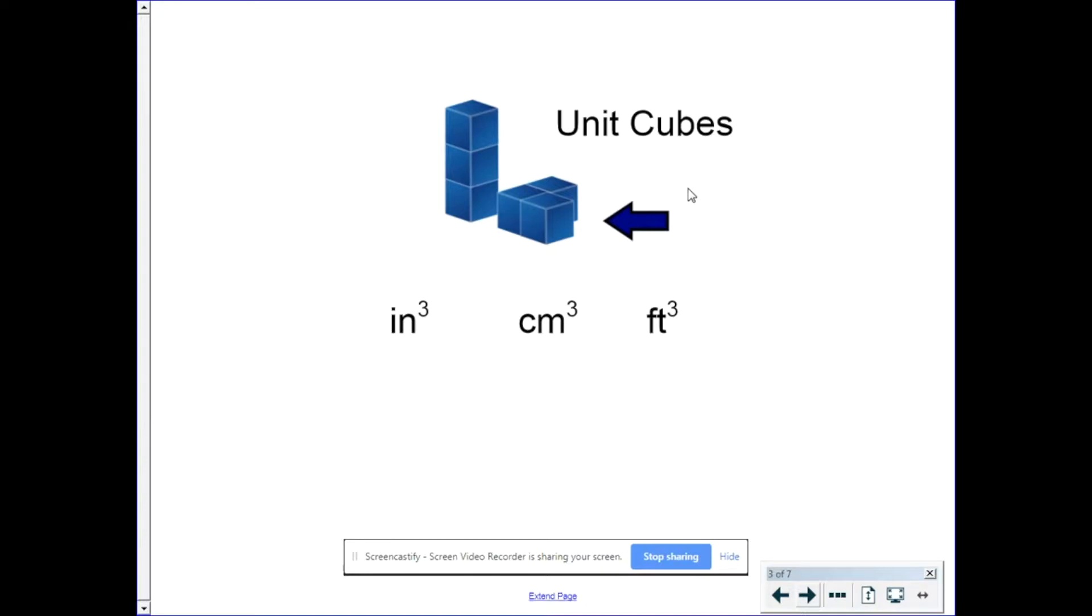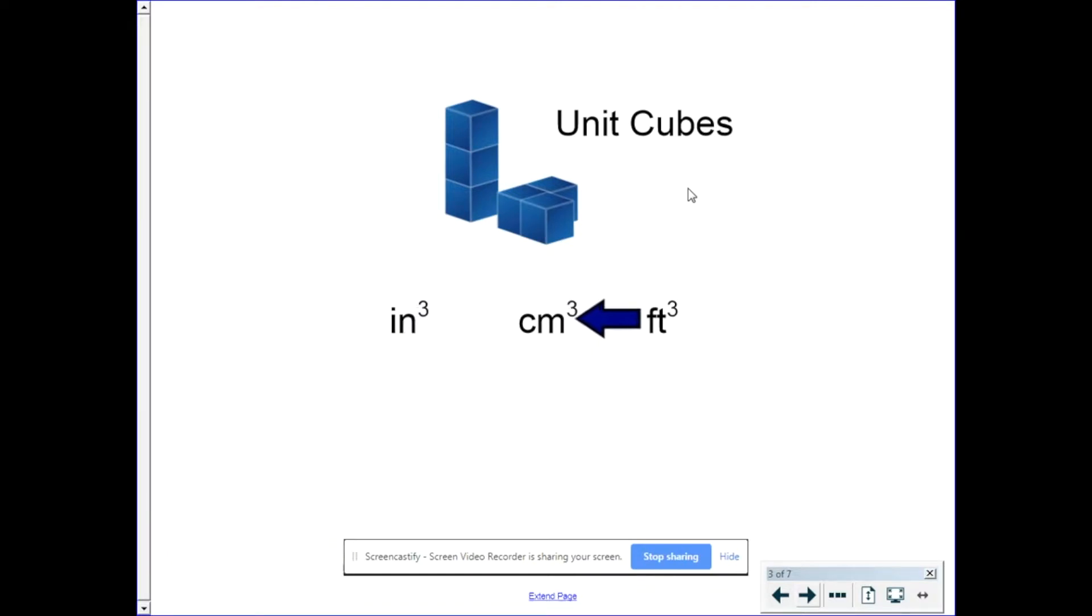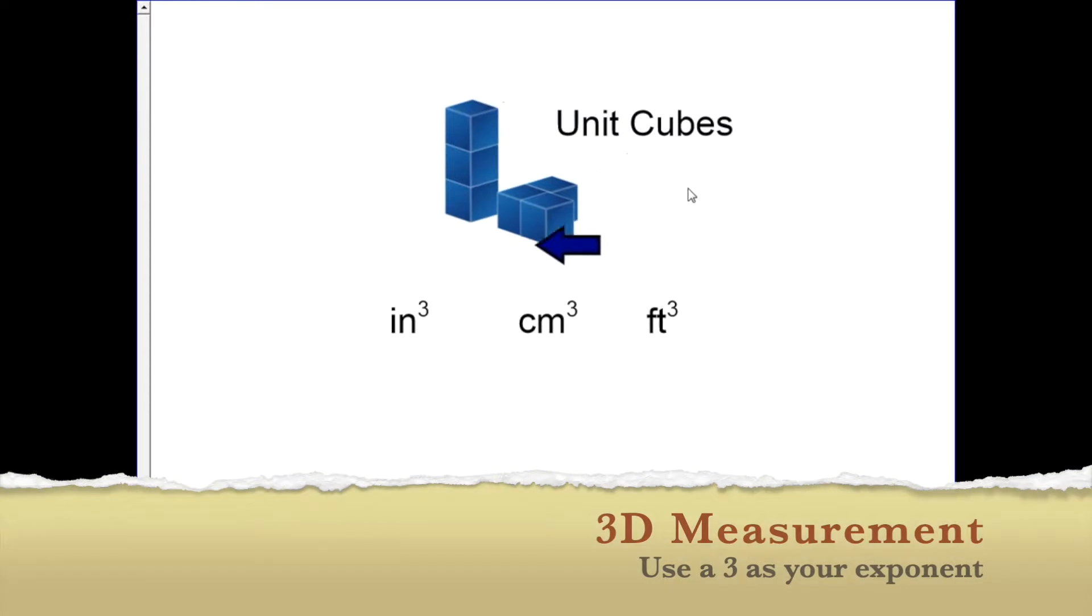What's important is that whenever you're talking about volume, unless you're using a measurement specific to volume, like liters or gallons, you need to have the exponent three. That implies it's cubic inches, cubic centimeters, or cubic feet. A way to remember this is that we're talking about a three-dimensional measurement. We are measuring the inside of a space. So, three-dimensional measurement, you put a three up there.